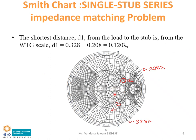Draw the line passing from the center through Z1 and out of the graph. This line will intersect the wavelength circle at 0.328 lambda. The distance D1 between ZL and Z1 is found by subtracting: 0.328 lambda minus 0.208 lambda equals 0.120 lambda. So the first possible stub position D1 is 0.120 lambda.